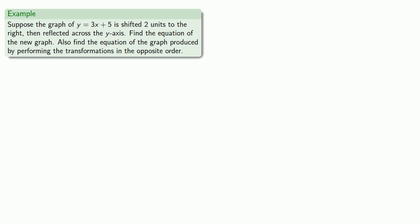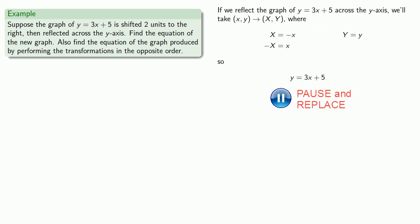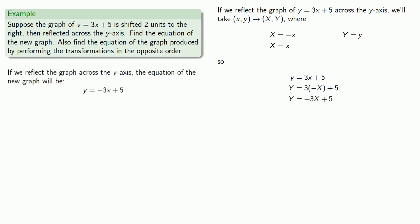What happens if we do the transformations in the opposite order? So, first we'll reflect the graph across the y-axis, so our new x and y coordinates will be. We'll solve for the original x and y coordinates and replace. Do a little algebra. So, if we reflect the graph across the y-axis, the equation of the new graph will be y equals negative 3x plus 5.